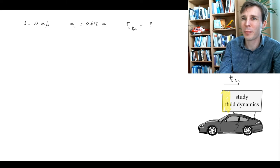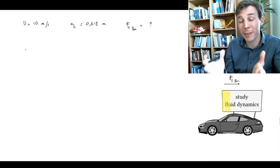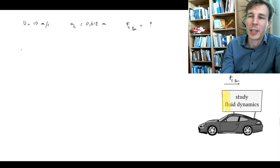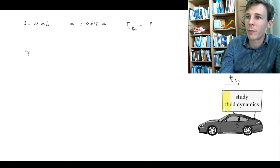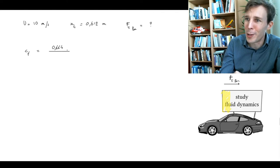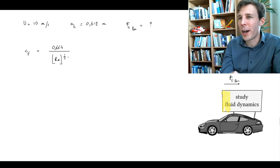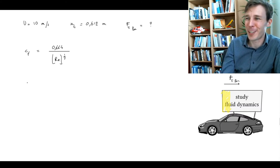We start with the formula sheet which gives us all the main models available for different boundary layers. In this case we're in the laminar boundary layer. The formula sheet gives us an expression for C_F, the friction factor, which happens to be 0.664 divided by the square root of the Reynolds number. I look this up rather than try to learn it by heart.